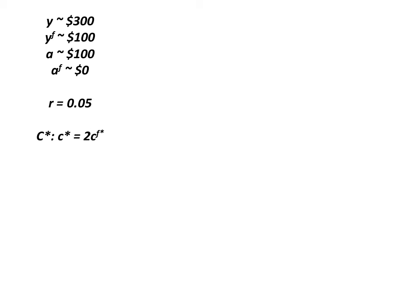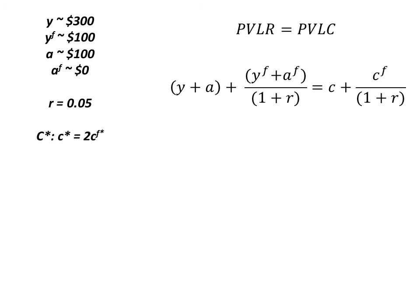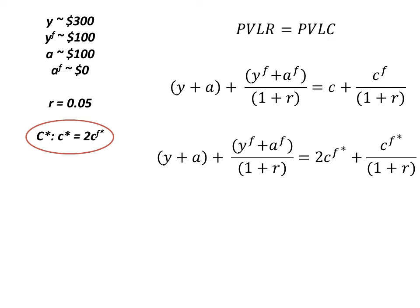Now let's move on to the second example. The second example keeps the same numbers, but now the optimal consumption bundle says that current consumption is going to be equal to twice future consumption. We go through the same exact steps — present value of lifetime resources equals present value of lifetime consumption — but now because current consumption equals twice future consumption, we substitute in 2·CF for current consumption.